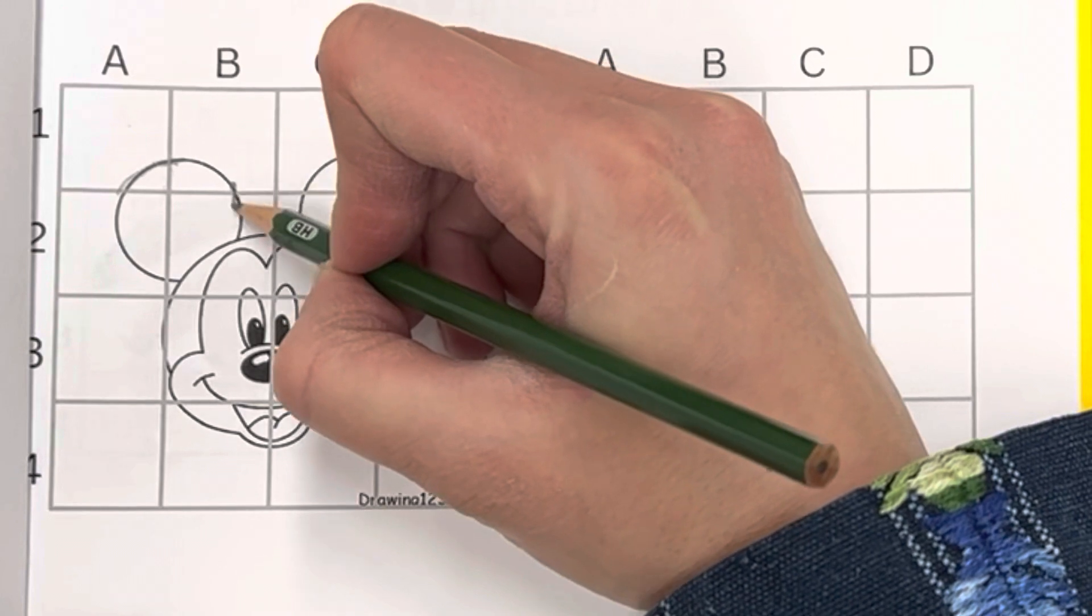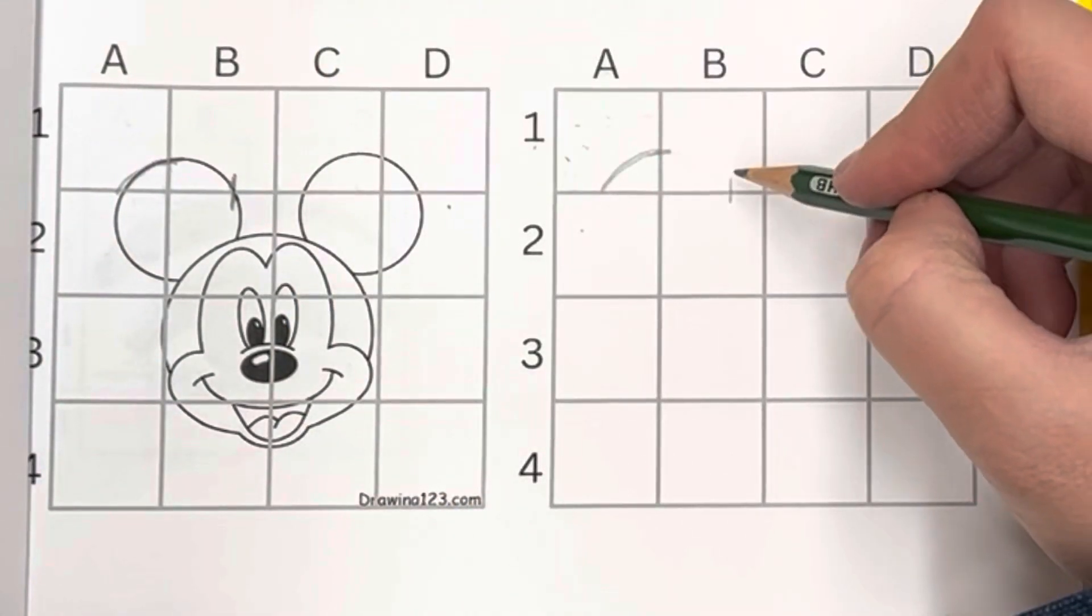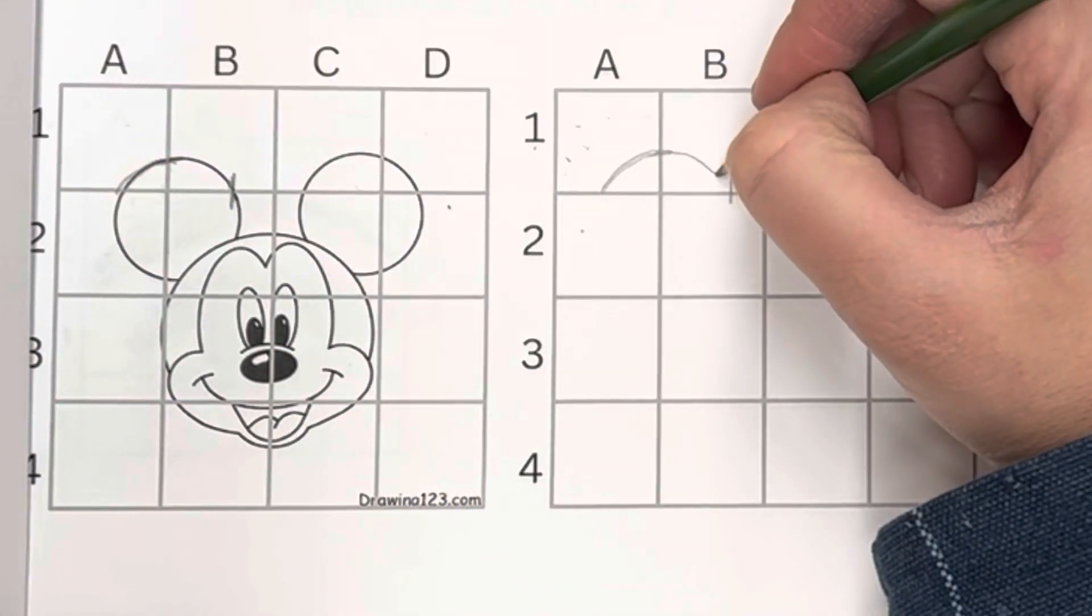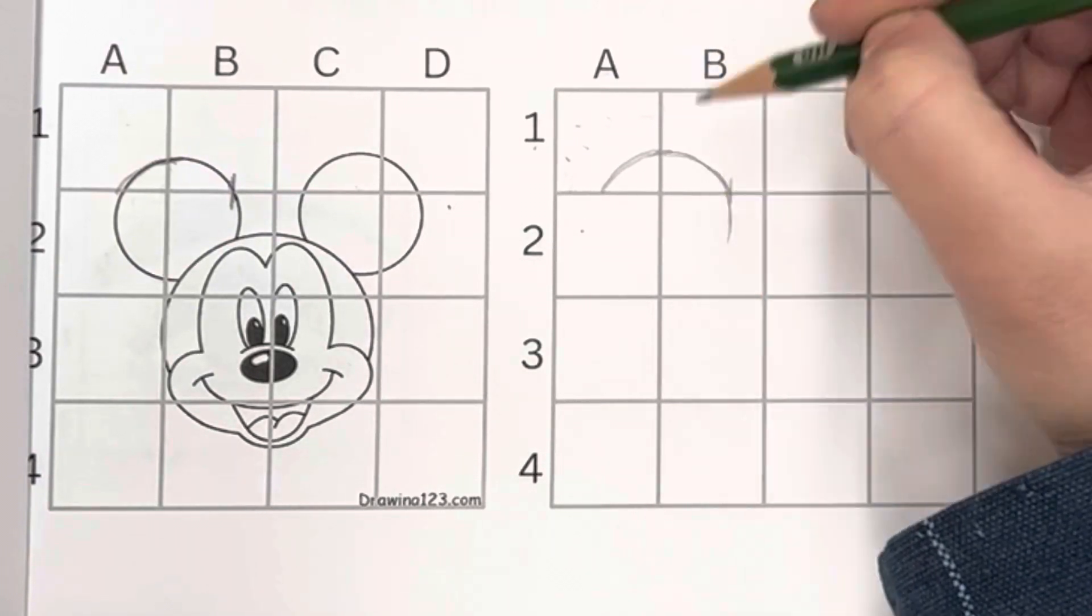The way I do that is say where does it intersect? Right here. It intersects right there, so then I kind of make my curve match and come down.